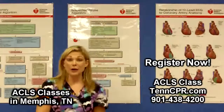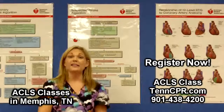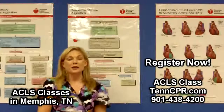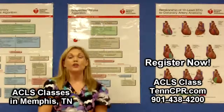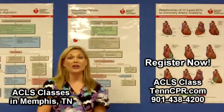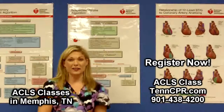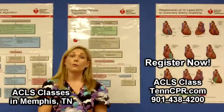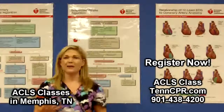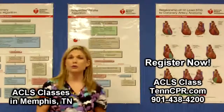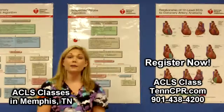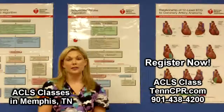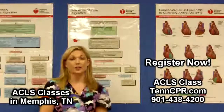The third and final part of the Cincinnati Stroke Scale is assessing their speech. You ask them to repeat the sentence: 'You can't teach an old dog new tricks.' If there is any slurred speech, poor use of words, inability to say a word correctly, or if they are not able to speak at all, this could be a sign that the victim is having a stroke.